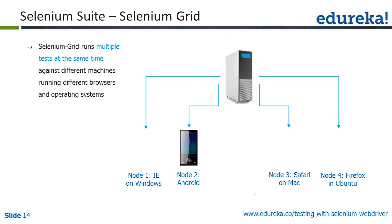Selenium Grid runs multiple tests at the same time against different machines running different browsers and operating systems. Whenever you have an application, you want to test compatibility across different browser versions, machines, and platforms. Selenium Grid enables parallel execution, saving a lot of time. For example, Node 1 might have Internet Explorer on Windows, Node 2 an Android device with Chrome, Node 3 Safari on Mac, and Node 4 Firefox on Ubuntu — all running the same script simultaneously from the Selenium server.